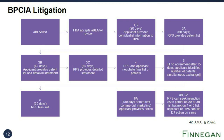In a second phase of BIPCA litigation, governed by L(8) and L(9), the applicant provides notice at least 180 days before its first commercial marketing. Case law tells us that this notice can be given before or after the ABLA is approved. The sponsor can then seek an injunction as to any patent on the party's initial list that was not litigated, and the applicant or the sponsor can file a declaratory judgment action as to those same patents.